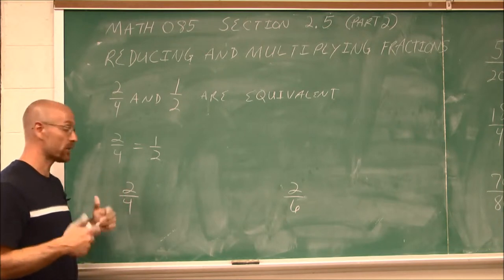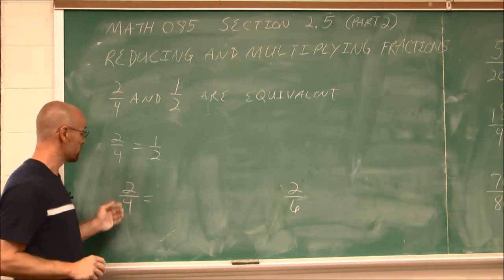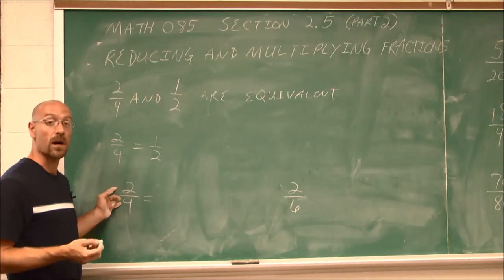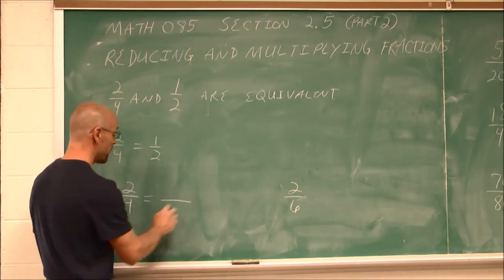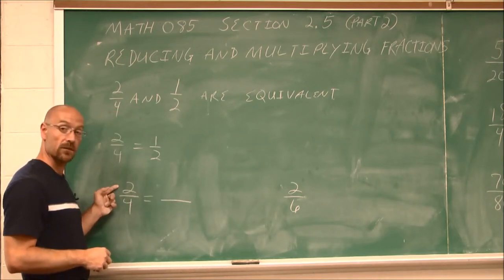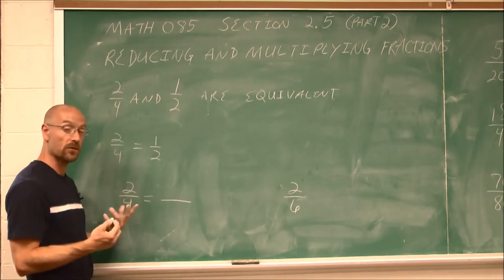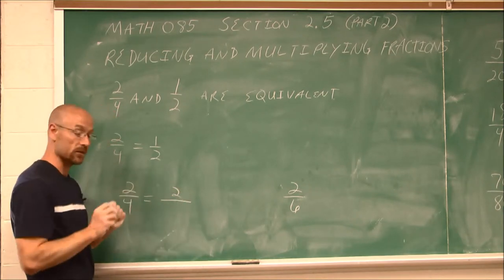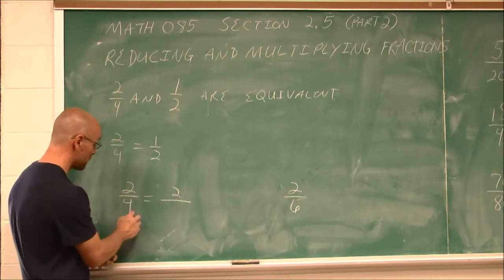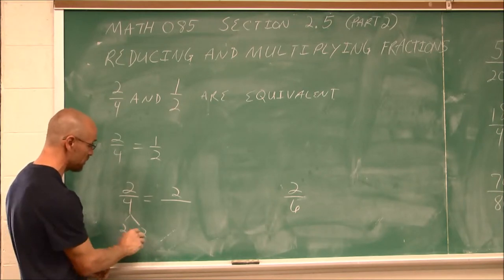So what's the other method that I kind of referred to? Well, in a previous section, we talked about prime factorization. Let's write this as the product of its primes. Well, 2 is a prime number. It is what it is. But 4, if we factor it down, maybe we use a factor tree, it's 2 times 2.